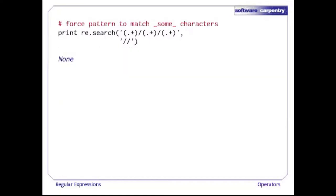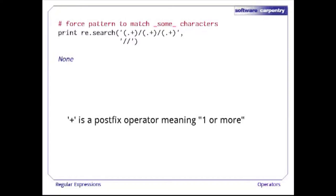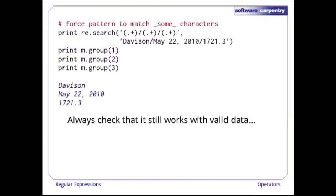Let's try a variation that uses plus instead of star. In a regular expression, plus is a postfix operator meaning one or more, i.e. it has to match at least one occurrence of the pattern before it. The pattern dot-plus slash dot-plus slash dot-plus doesn't match a string containing only slashes, because there aren't characters before, between, or after the slashes for the dot-pluses to match. If we check it against real data, it seems to be doing the right thing.